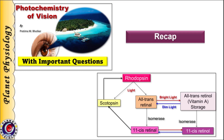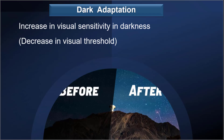Let's begin with the topic of dark adaptation. When a person spends considerable time in bright light and then enters a dimly lighted room, initially he cannot see anything. But slowly his visual sensitivity increases and he starts seeing objects clearly. This increase in visual sensitivity, or decrease in visual threshold in darkness, is called dark adaptation. In simple words, dark adaptation is the adjustment of the eyes to see clearly under low light conditions.